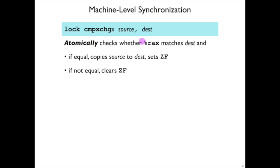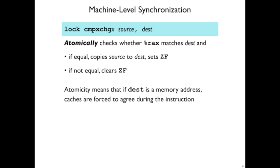So what this is used for is making sure that a variable that you want to update still has the old value that you're updating it from. And again, if DEST, when it's a memory address, then caches are forced to agree about the content of that across all CPUs.